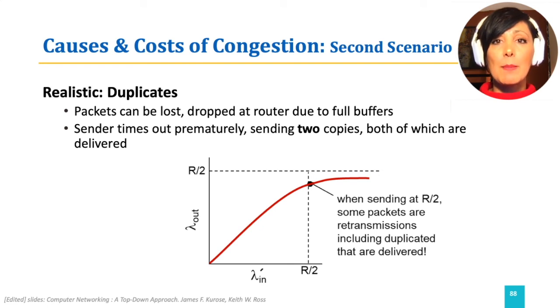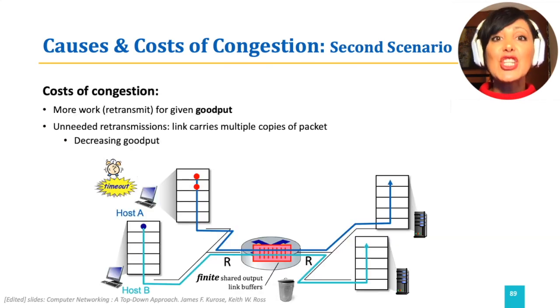So, by sending rate getting closer to half of the link capacity, even more retransmit packets are being sent. This means congestion in the network has caused even more work. This more work is in terms of retransmissions that are involved in reaching the same throughput observed by the application, which we call good put.